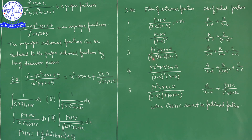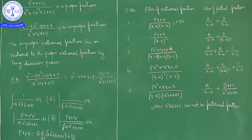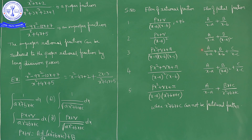For three non-repeated linear factors (x − a)(x − b)(x − c) in the denominator, we write the fraction as A/(x − a) + B/(x − b) + C/(x − c). Similarly, with four non-repeated linear factors, we write A/(x − a) + B/(x − b) + C/(x − c) + D/(x − d). This is the rule whenever you have non-repeated linear factors in the denominator.